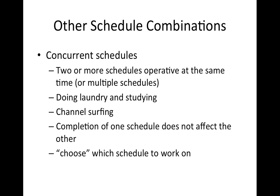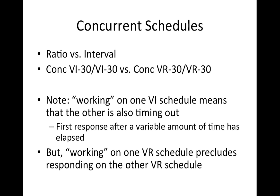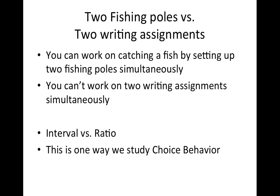There are other schedule combinations. Concurrent schedules involve two or more schedules operative at the same time — for example, doing laundry and studying, or channel surfing. Completion of one schedule does not affect the other; you have to choose which to work on. In behavior analysis, we often study choice using concurrent schedules. Concurrent interval schedules are really different than concurrent ratio schedules. For instance, you can cast two fishing poles and catch fish simultaneously — that's interval-like — but you can't work on two writing assignments simultaneously, which is more like a ratio schedule.